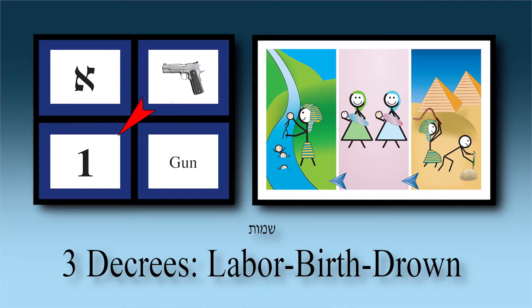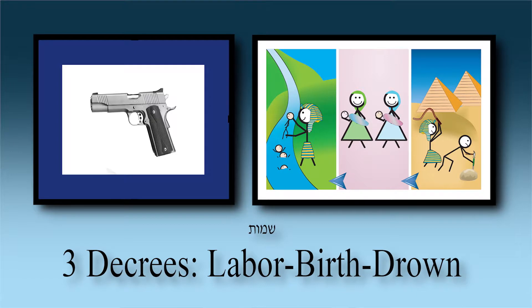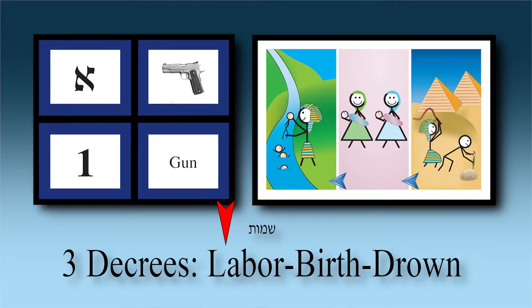What is our simon for chapter one? It rhymes with 'gun.' Imagine one of those pop guns where you pull the trigger of a wooden gun and out comes a flag that unfolds. Written on the flag you see: three decrees — L, B, D. One gun, three decrees: L for Labor, B for Birth/Boy, D for Drown.